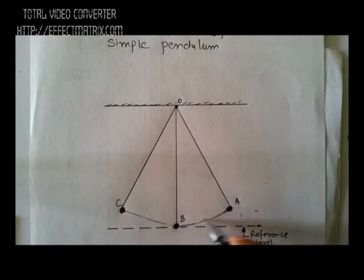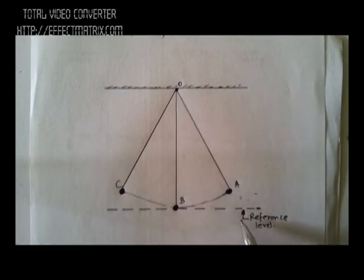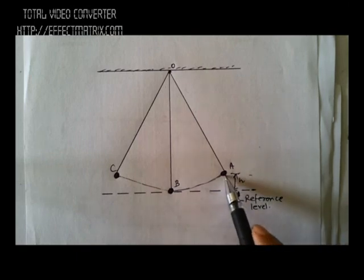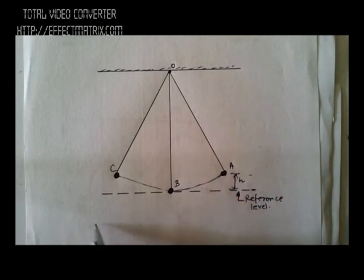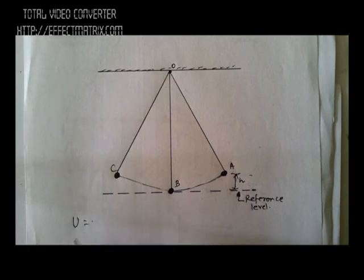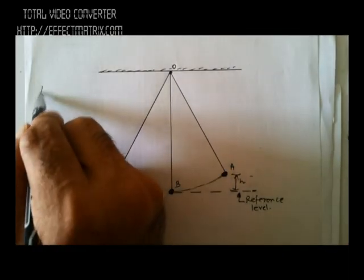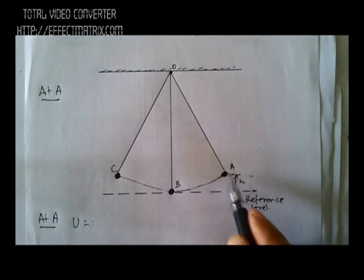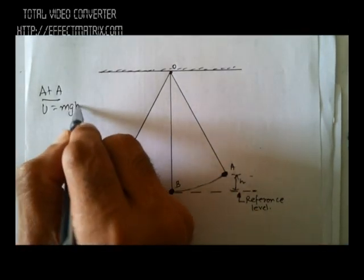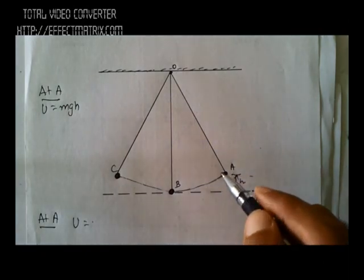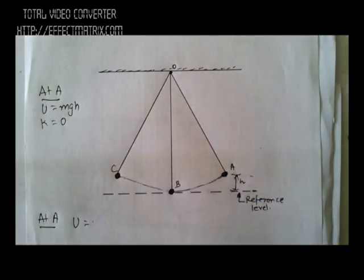The pendulum starts from A, goes to B, then to C, and returns. If I consider the mean position as the reference level, at location A the pendulum is at height h from the reference. So potential energy U = mgh. Since it is starting its journey and velocity is zero, kinetic energy is zero.